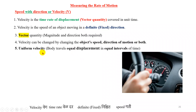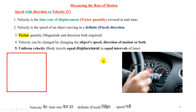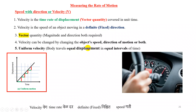Now let's discuss uniform motion and non-uniform motion. If the body travels equal displacement in equal intervals of time, that is uniform velocity. This graph is discussed in this video in detail. Remember, here the word is displacement, and displacement means vector quantity — magnitude and direction both are important. In the graph, the green color line represents the time duration and the red color line represents the displacement.